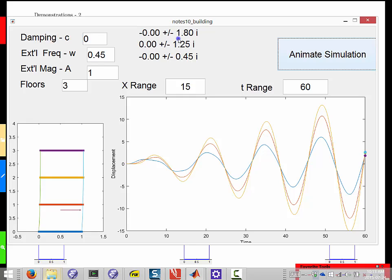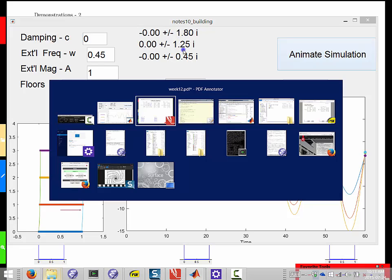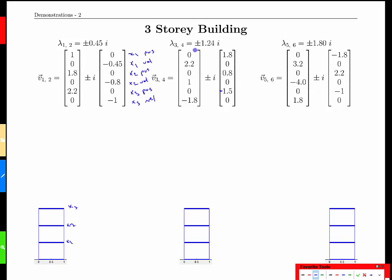Let's take a look at the other two frequencies, and in particular their eigenvectors, and see what they could tell us. Let's look next at the 1.24. And notice again, position, velocity, position, velocity. Here are three positions.